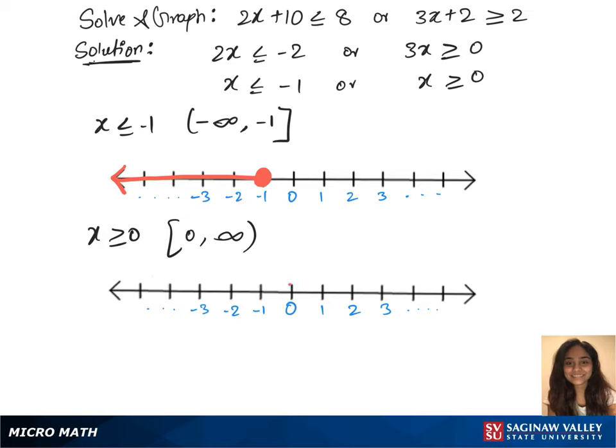We plot this on the graph. Mark 0, that extends to infinity. Initiate the region in between those two points. And now we see the union between those two graphs. Our solution set is negative infinity to -1 union 0 to infinity.